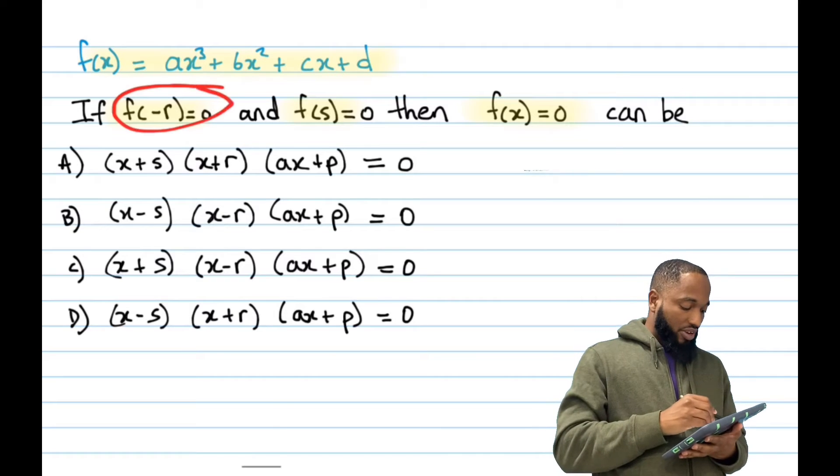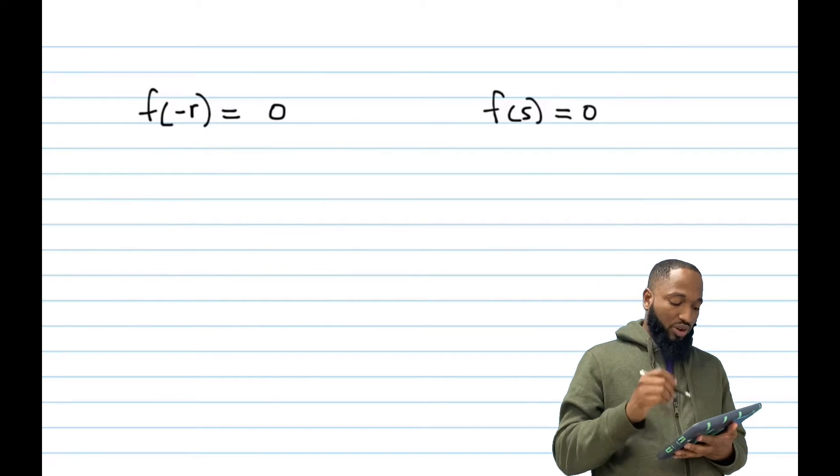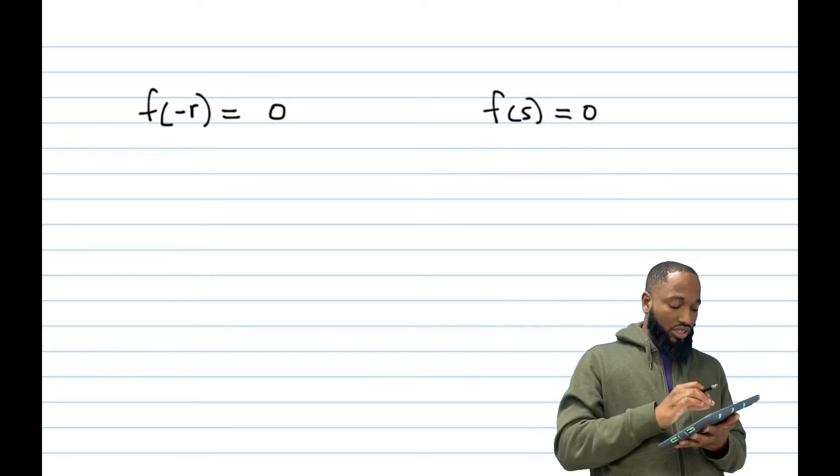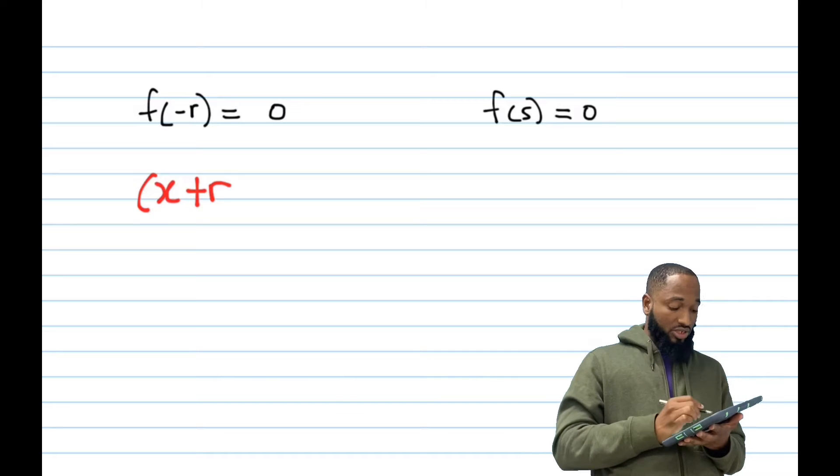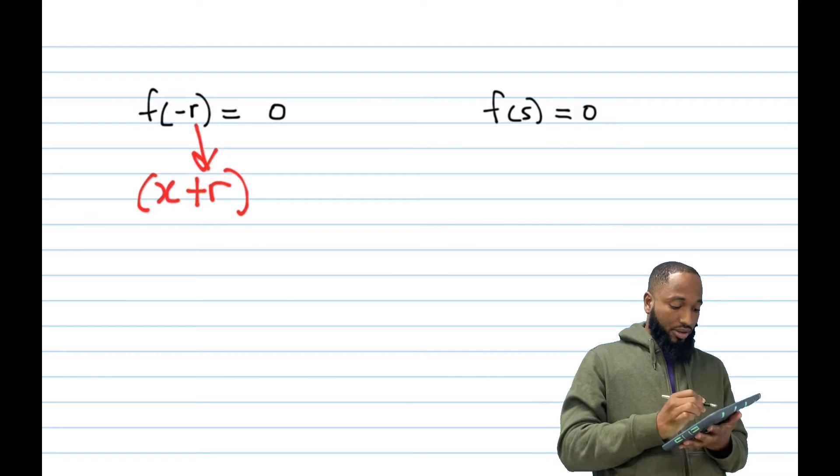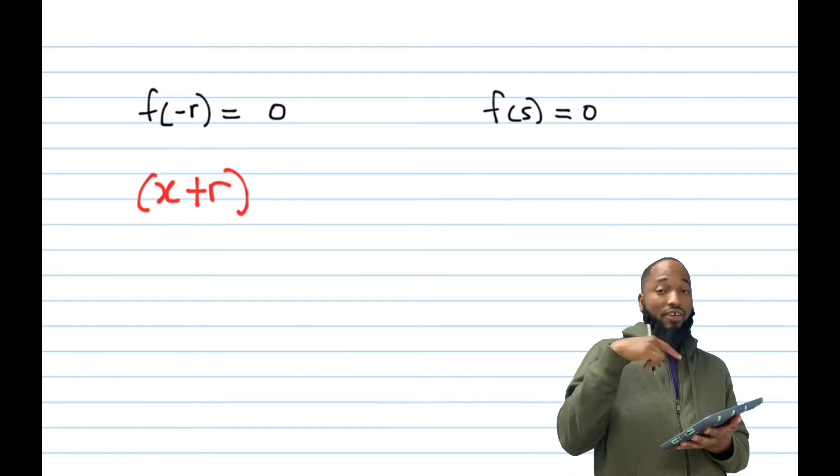Now, if f of negative r is equal to 0, we can reverse engineer that using the factor theorem and say that x plus r, because you need to do the additive inverse, remember, plus r is a factor.